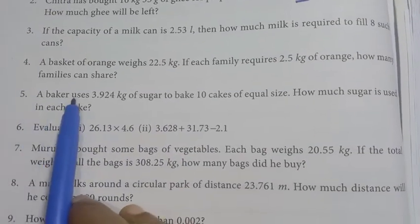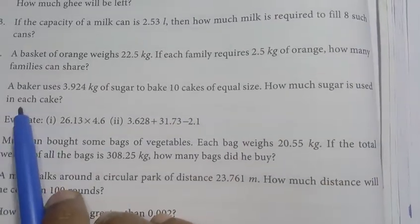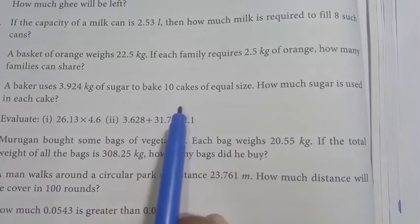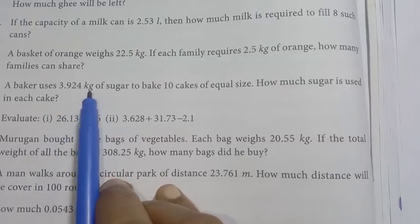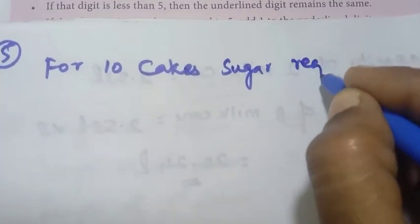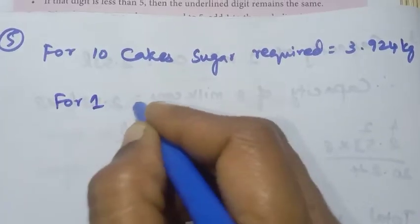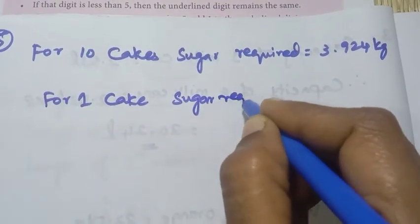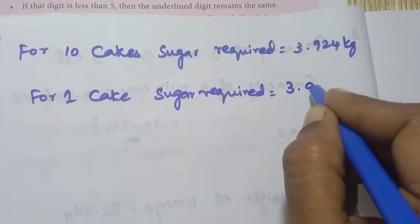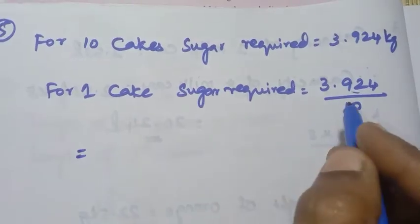Fifth question: A baker uses 3.924 kg of sugar to bake 10 cakes of equal size. How much sugar is used in each cake? Sugar required for 1 cake equals total sugar divided by 10, so 3.924 divided by 10.